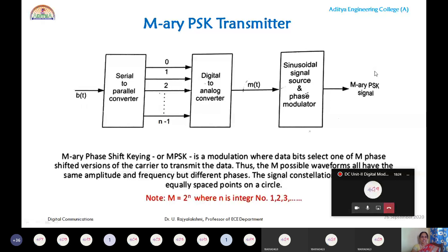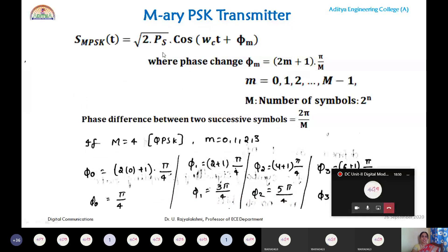In exams, draw this generalized block diagram and explain why M-ary is used: to reduce bandwidth by grouping N bits, thereby increasing the information or transmission rate. Now observe the generalized expression for M-ary PSK. For general PSK the expression is √(2Ps)·cos(ωct + φ), where φ = 0 for bit one and φ = 180° for bit zero.